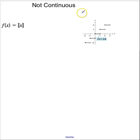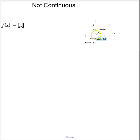Let's look at the greatest integer function. At every integer, this function is discontinuous. Therefore, it's also not differentiable.